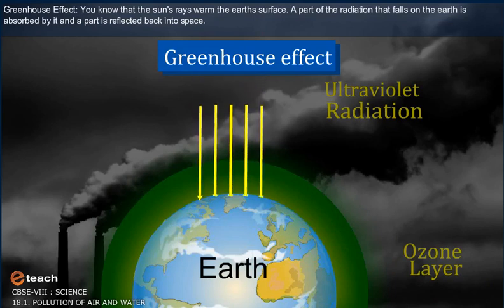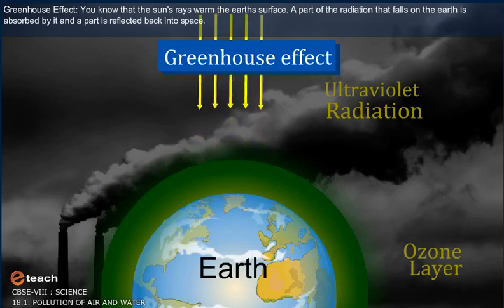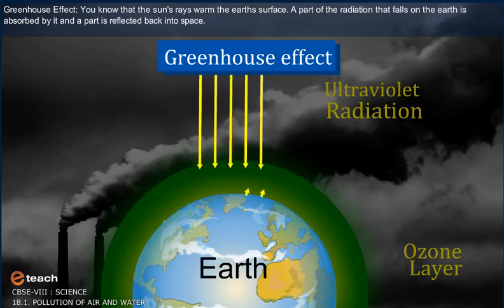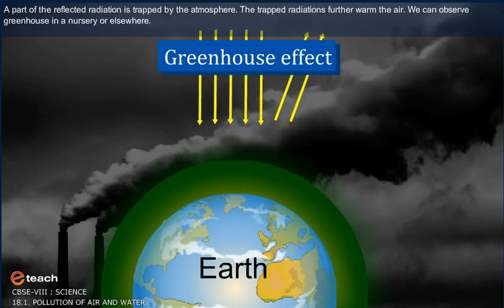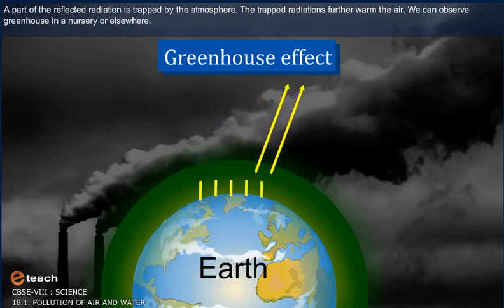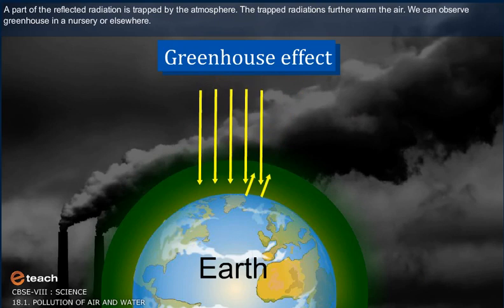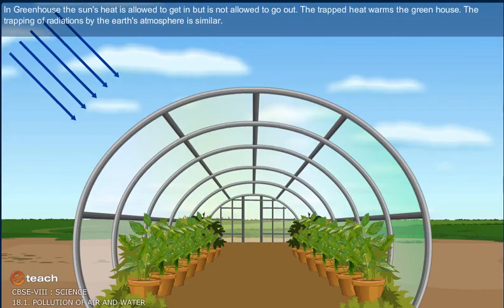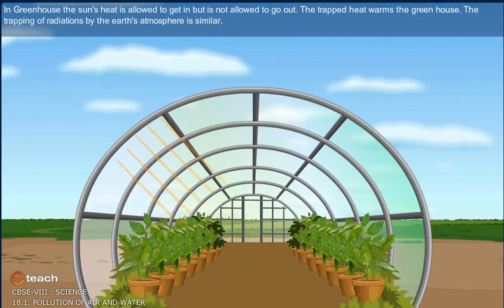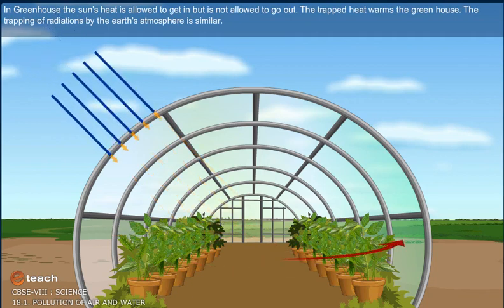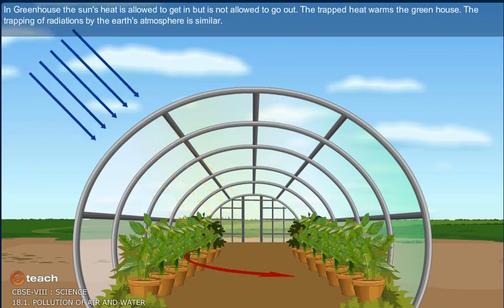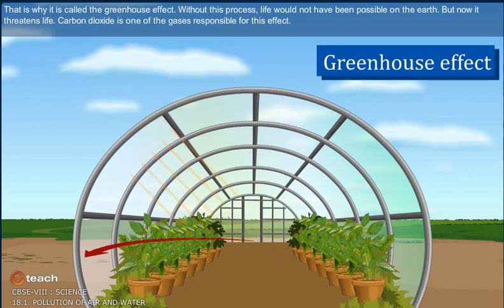You know that the sun's rays warm the earth's surface. A part of the radiation that falls on the earth is absorbed by it and a part is reflected back into space. A part of the reflected radiation is trapped by the atmosphere, and the trapped radiation further warms the air. In a greenhouse, the sun's heat is allowed to get in but is not allowed to go out. The trapping of radiation by the earth's atmosphere is similar — that is why it is called the greenhouse effect.